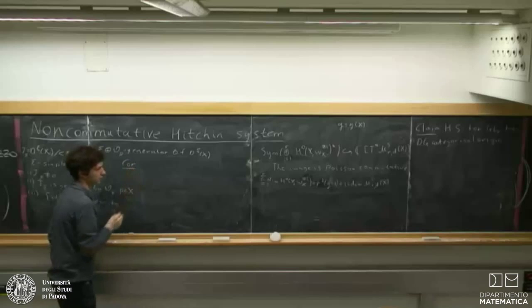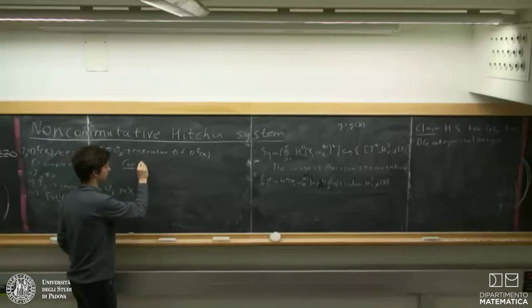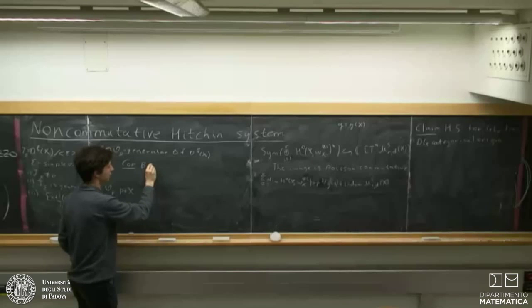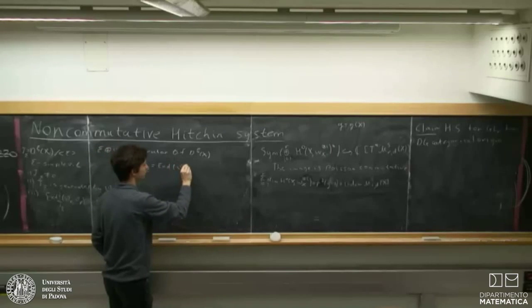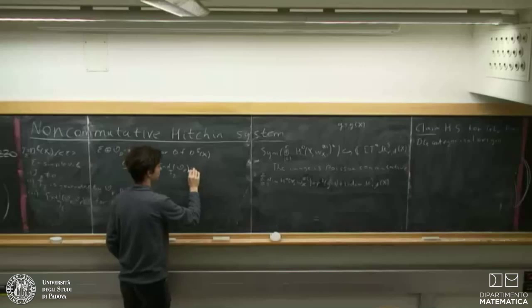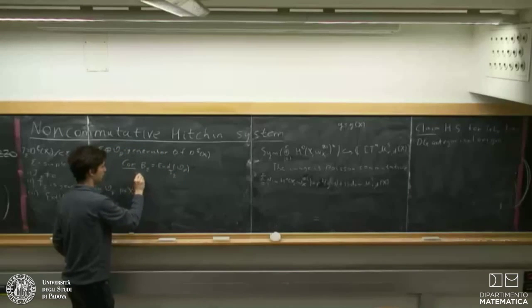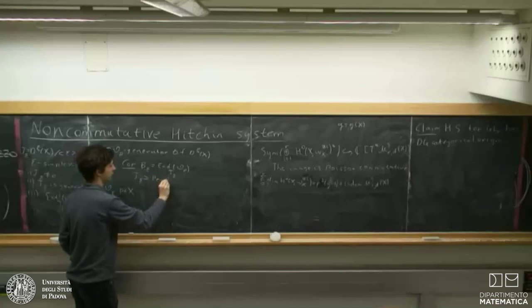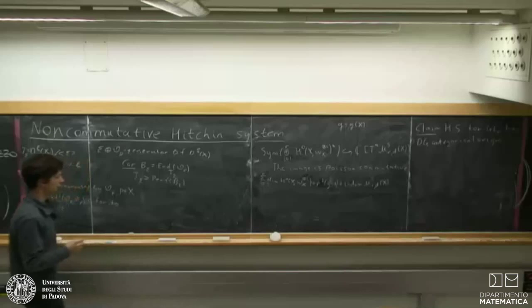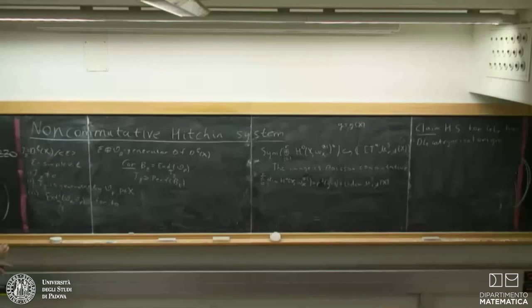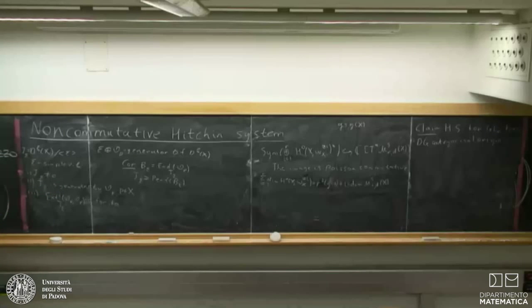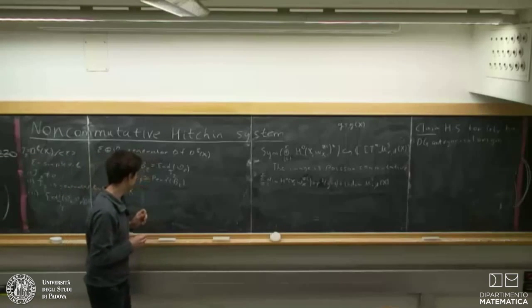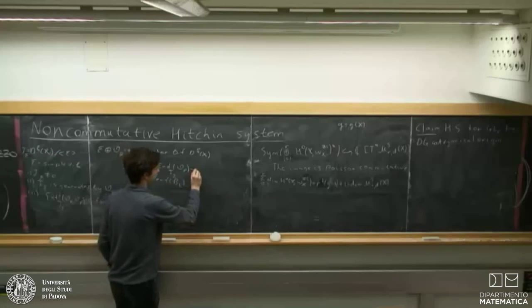As a corollary, if we take the algebra B_E to be just the endomorphisms — the associative algebra of endomorphisms of O_p ⊕ E in this quotient category — then the category T_E is equivalent to perfect complexes over B_E. It is Karoubian complete, so you don't need to add direct summands.